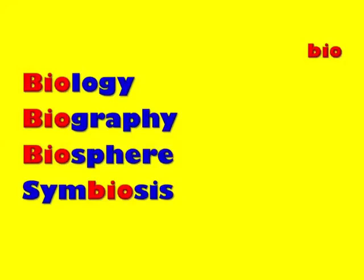Biography contains two root words — bio and graph. Graph is a root word that means to write. So a biography is a writing of someone's life, which is exactly what a biography is — when you write about someone else's life. The biosphere is a science term meaning all the things that live within a certain sphere, such as the water biosphere, the ocean's biosphere, or the jungle's biosphere — a place where a certain type of life is possible. Symbiosis also has to do with the same life, and is a term that comes from science.